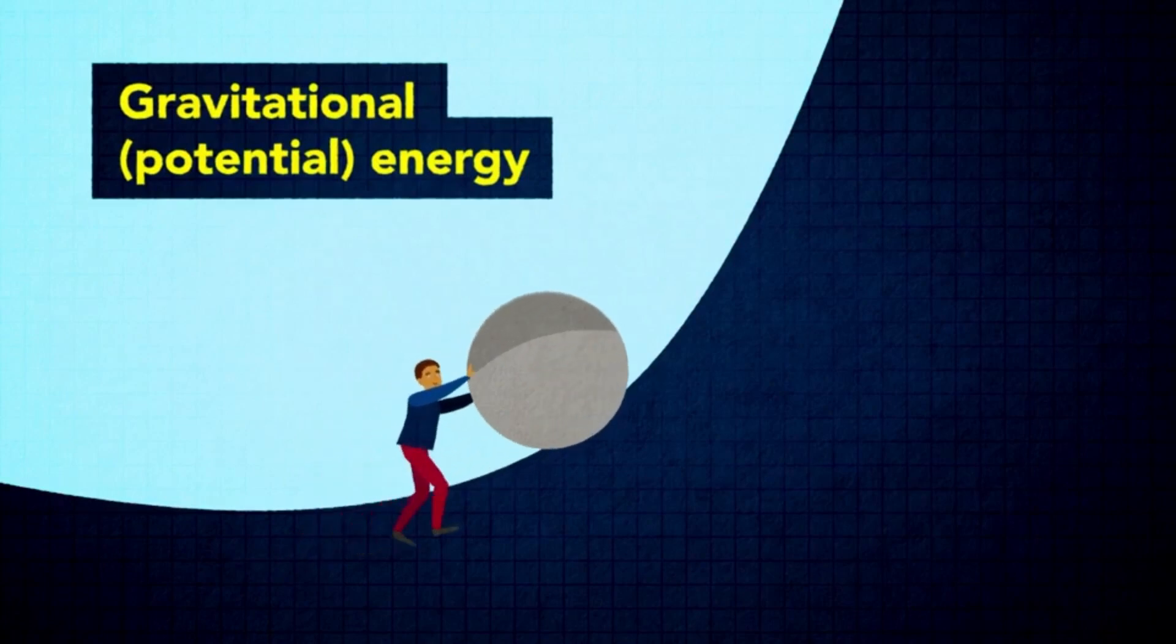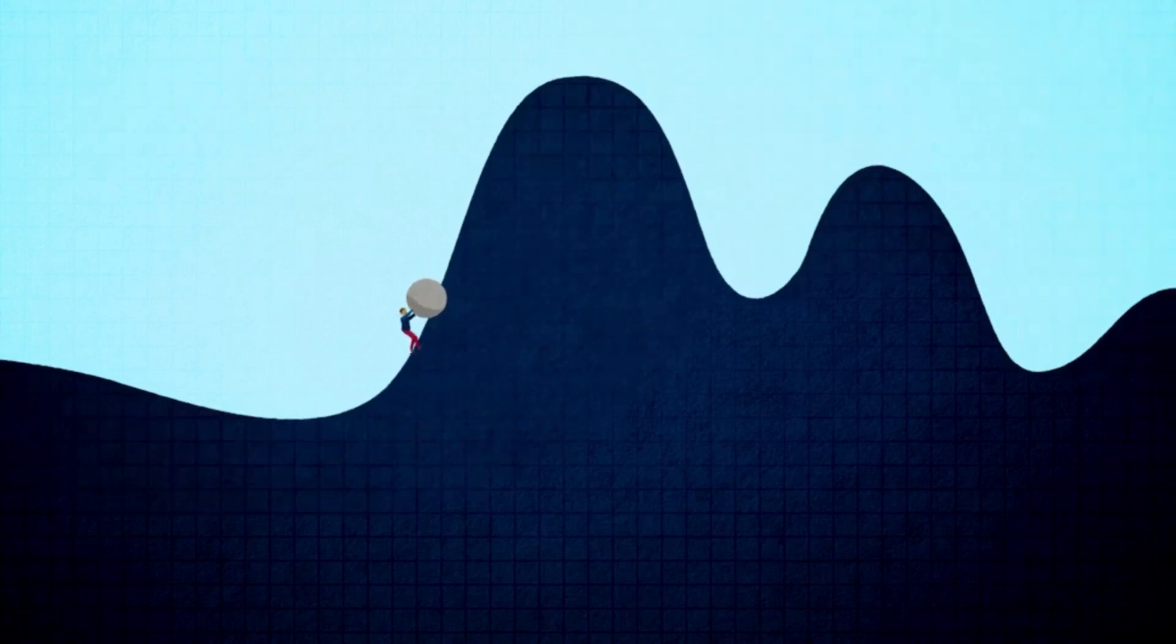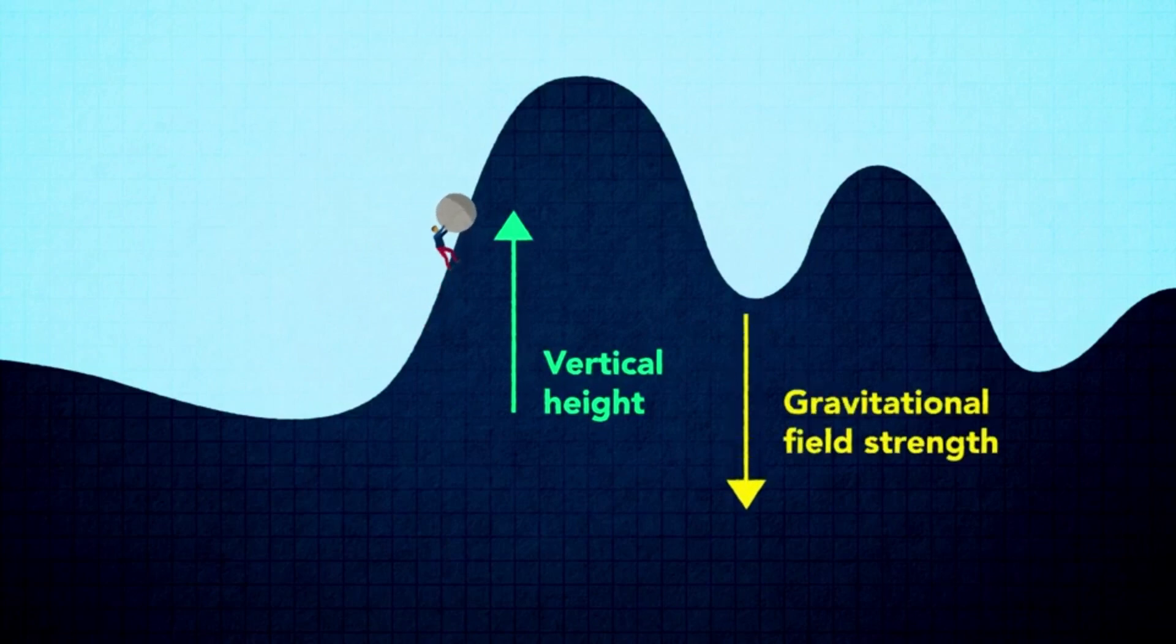Gravitational potential energy is stored when an object is moved higher than or away from a gravitational field. The amount of energy stored depends on the vertical height of the object, the strength of the gravitational field and the mass of the object.